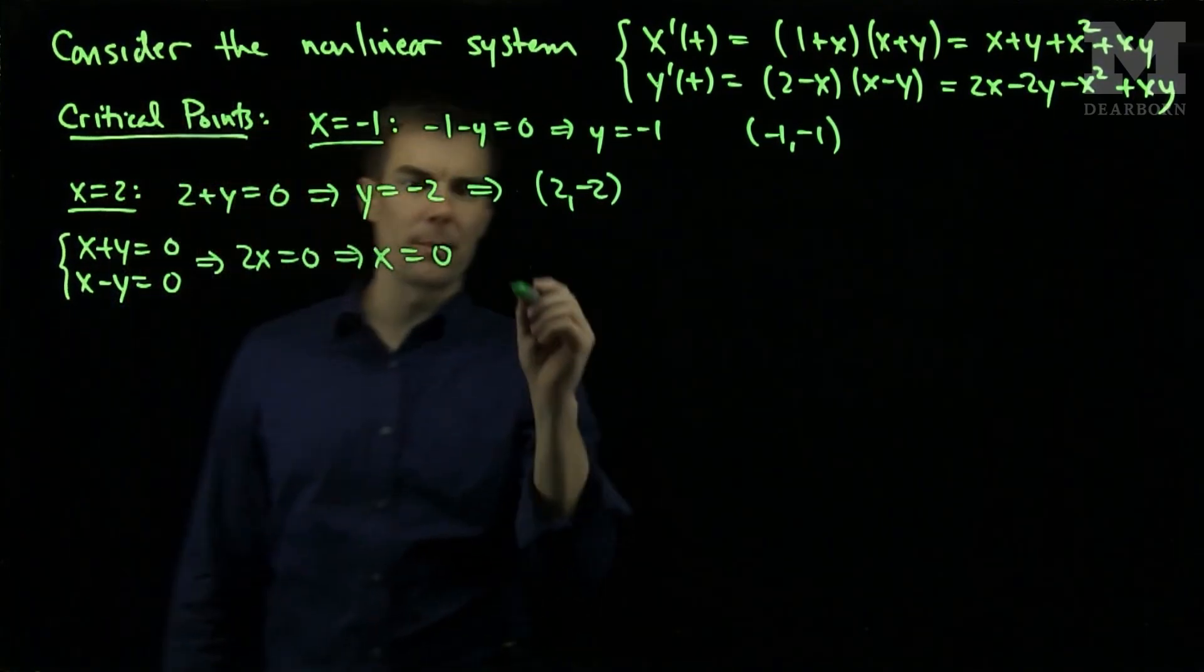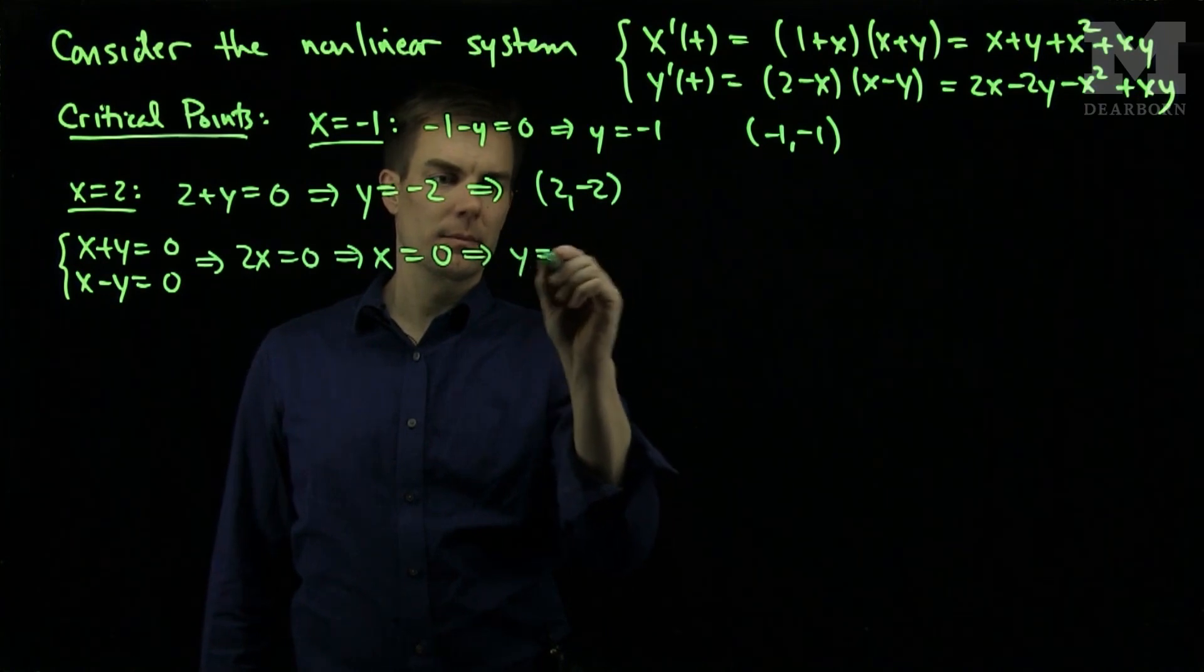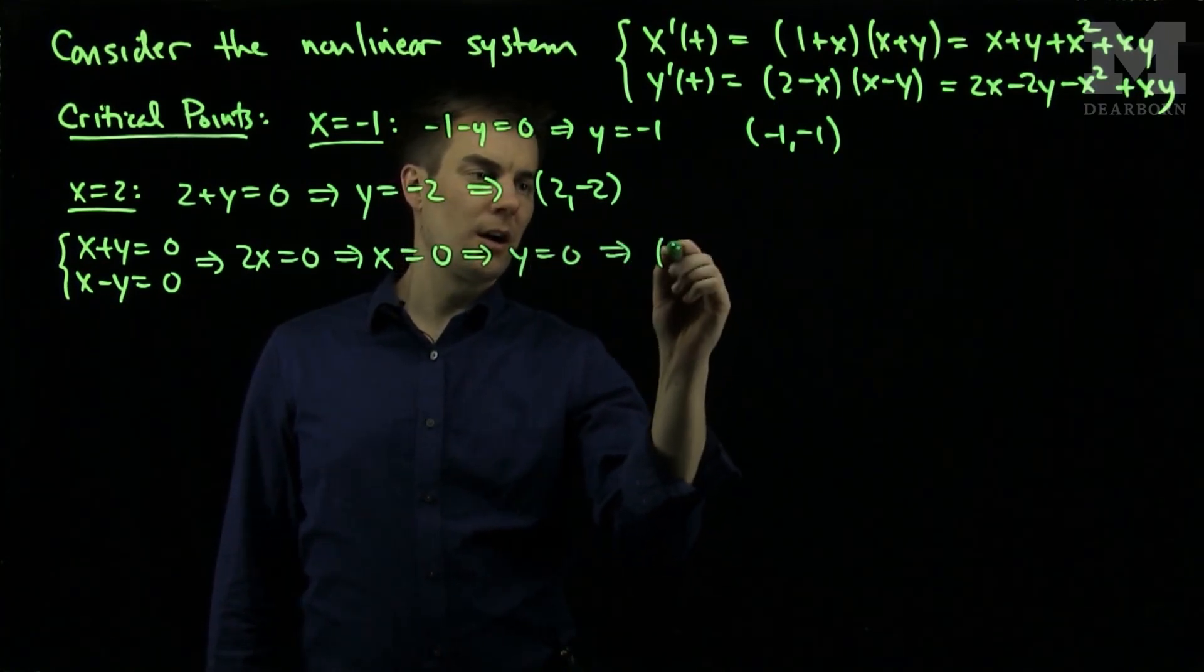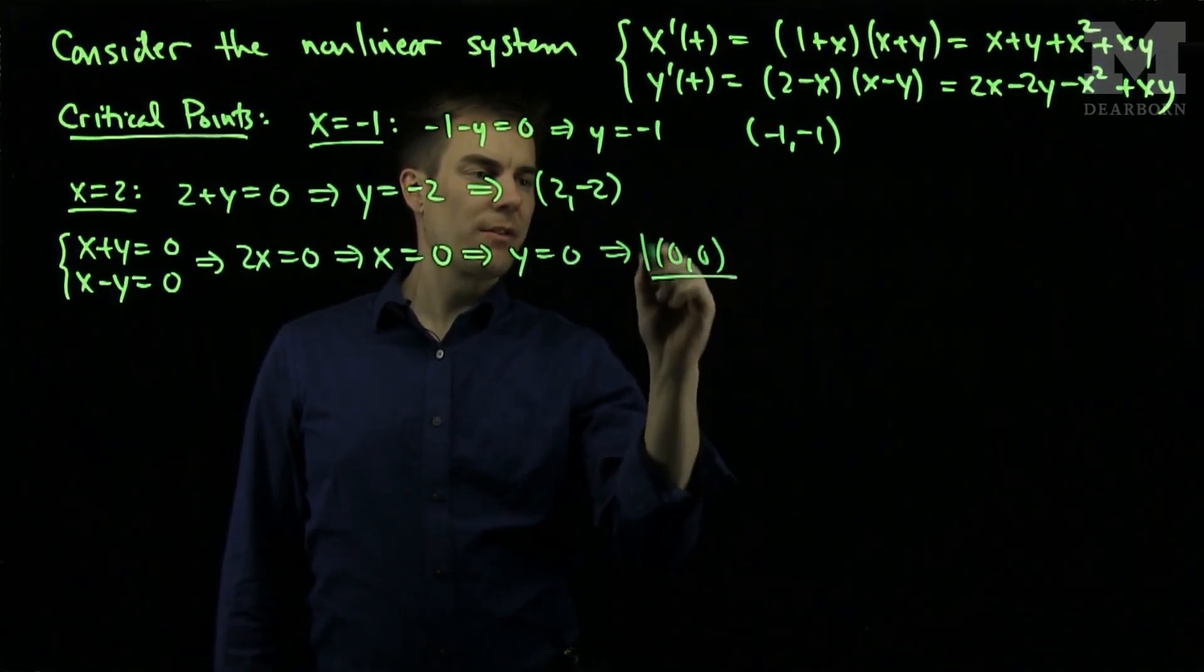And if x is zero, y must be zero as well. So I get the critical point of zero, zero. So I have three critical points.